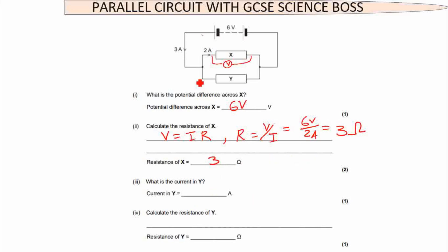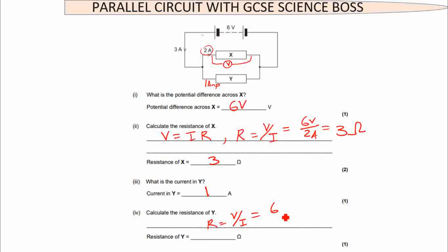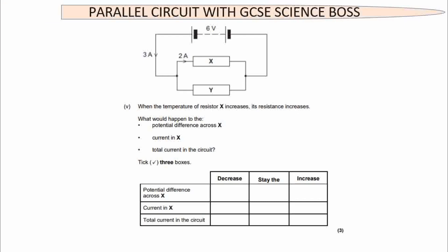What is the current going through Y? You have 3 amperes coming in total. Remember that current is shared, so if 2 amperes are going through X, then 1 ampere must be going through Y to add up to 3. So the answer is 1 ampere. Calculate the resistance of Y: R = V/I = 6 divided by 1, which gives 6 ohms.